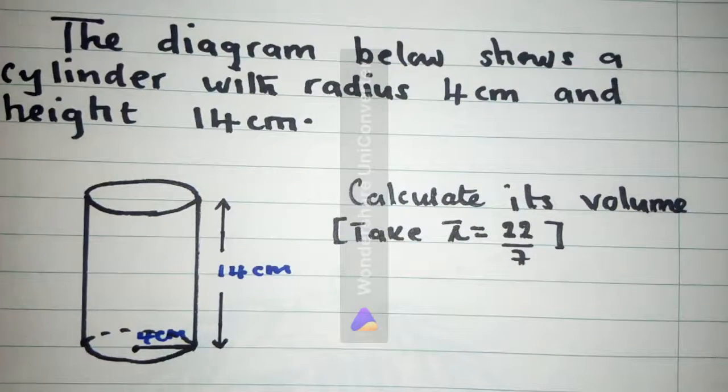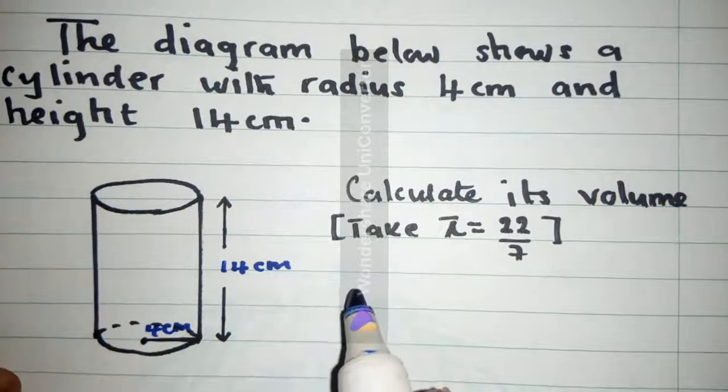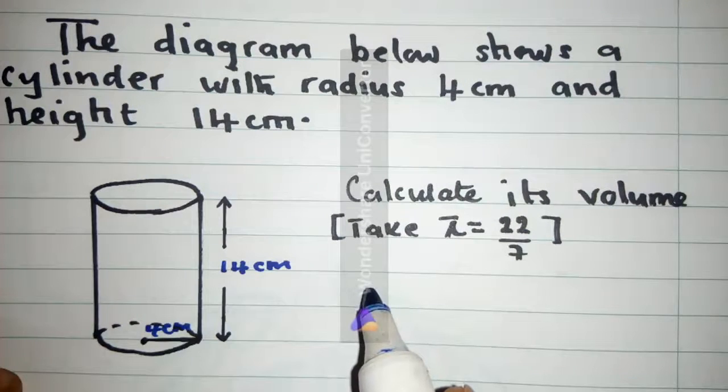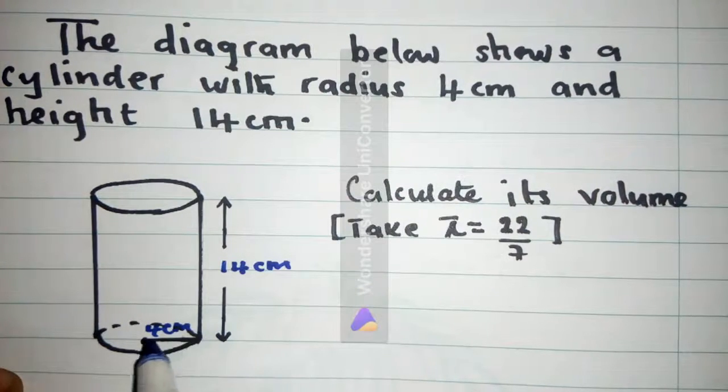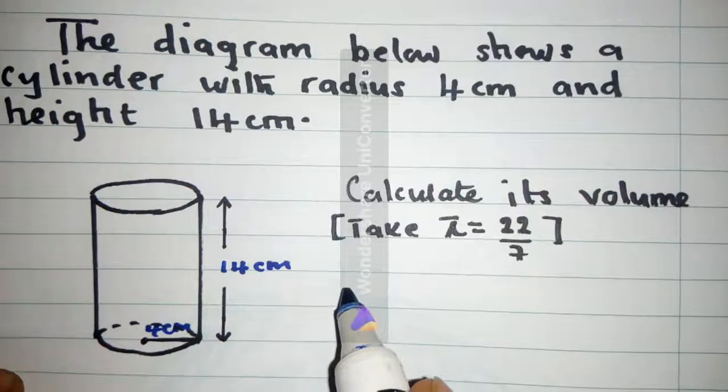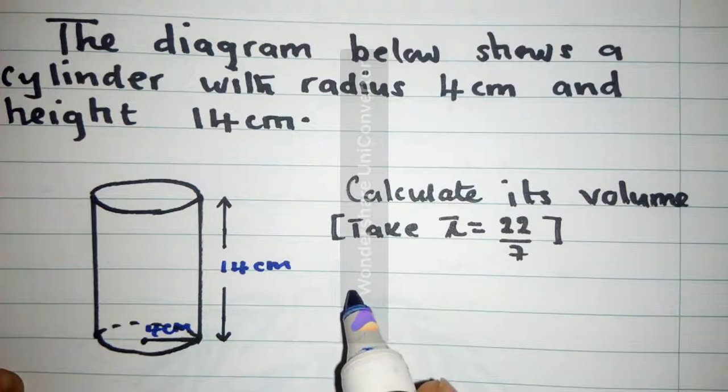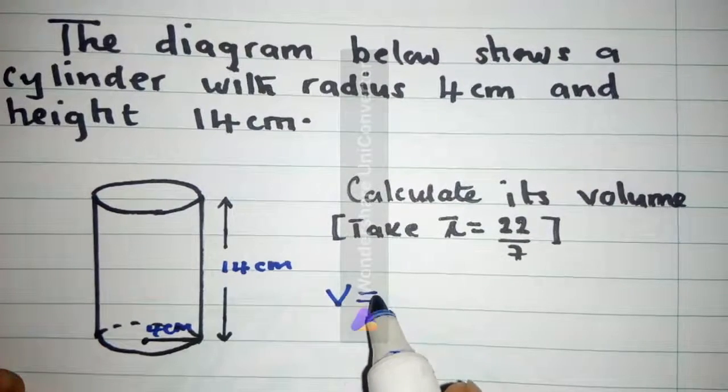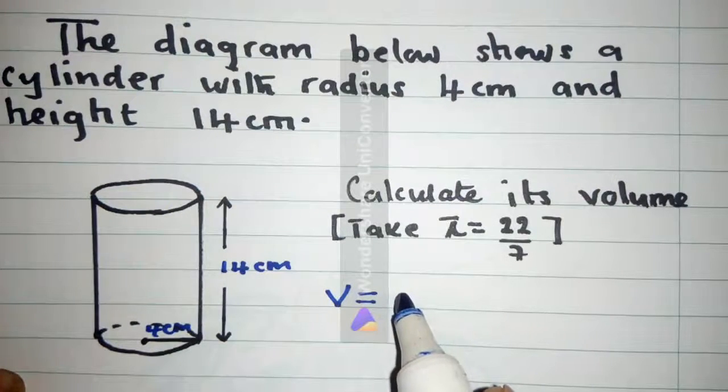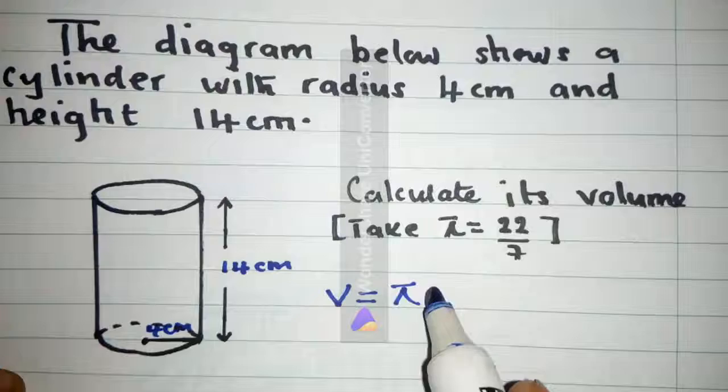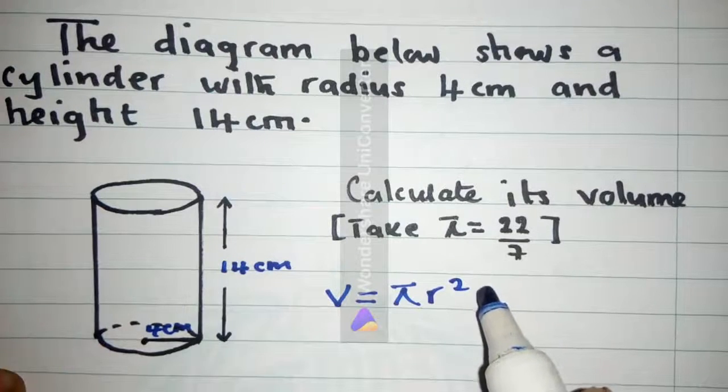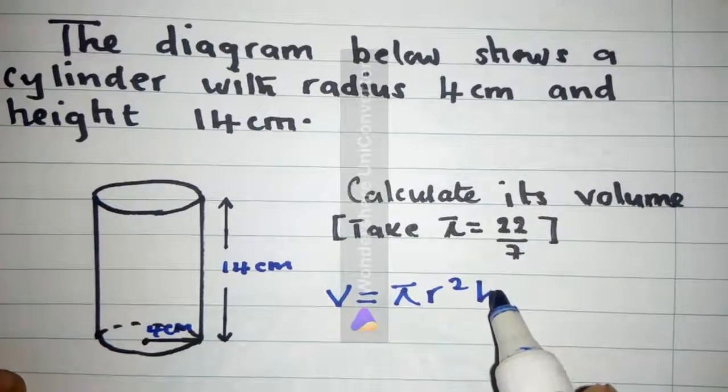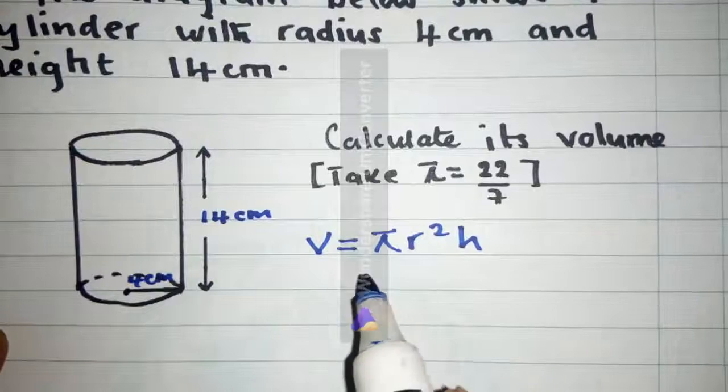To calculate the volume of the cylinder we use the formula area of the base times height. So, area of the base is what? Volume is equal to area of the base which is pi r squared times the height h. So this is the formula we are going to use.